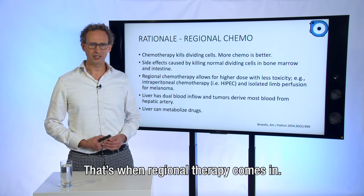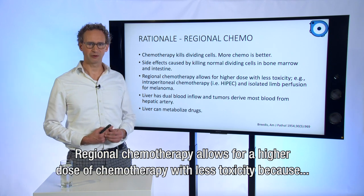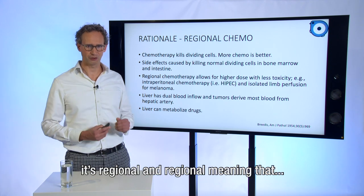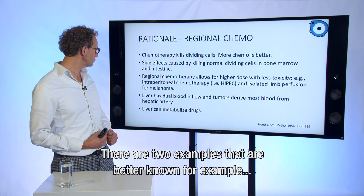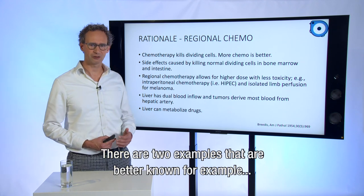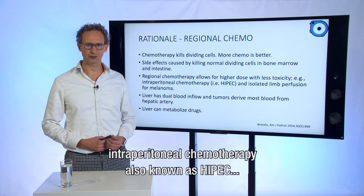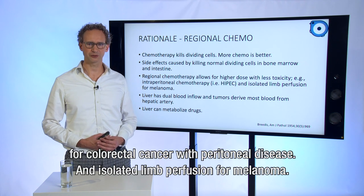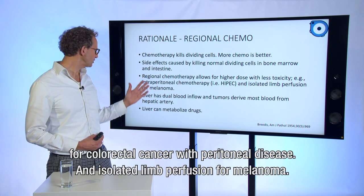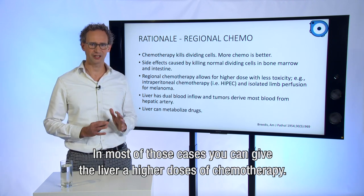That's where regional chemotherapy comes in. Regional chemotherapy allows for a higher dose of chemotherapy with less toxicity, because it doesn't reach as much the bone marrow or the intestine. Two examples that are probably better known are intraperitoneal chemotherapy, also known as HIPEC for colorectal cancer with peritoneal disease, and isolated limb perfusion for melanoma. In both those cases, you can give a higher dose of chemotherapy to the region.